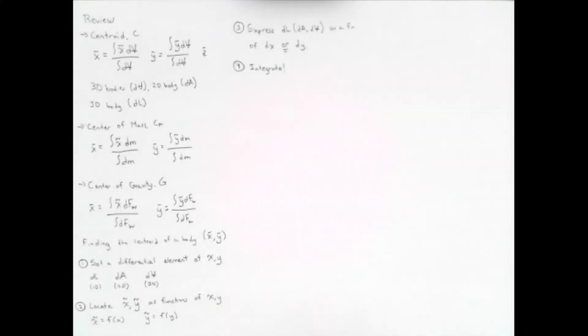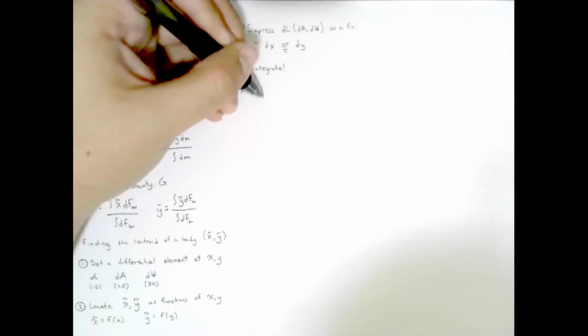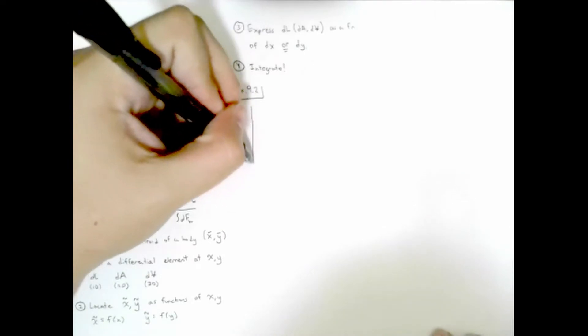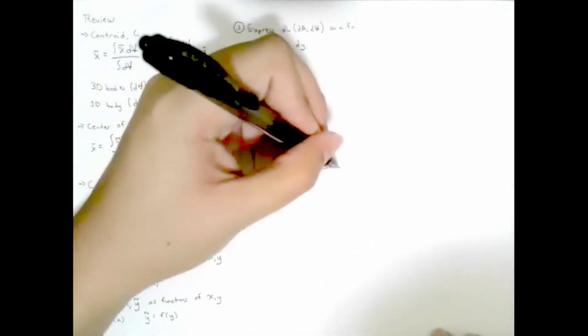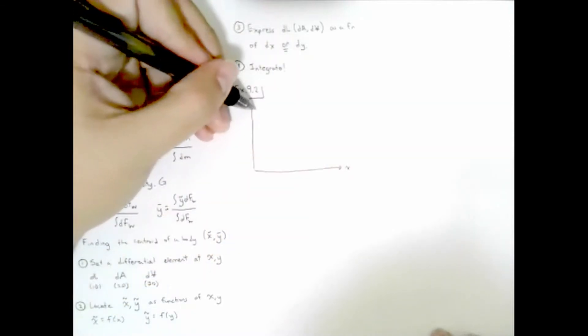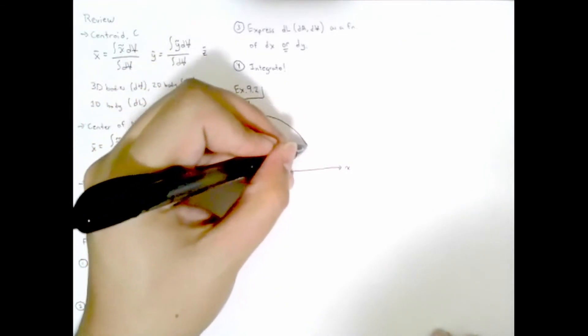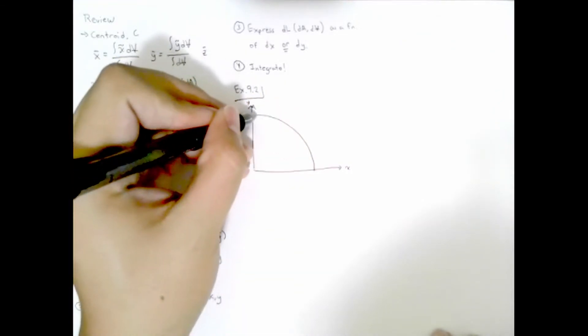On Monday we did an example for a one-dimensional element — a wire — and we visualized it as a one-dimensional element. Today I'd like to do another one-dimensional example. However, this time instead of looking at the element in Cartesian coordinates, we're going to look at the element in polar coordinates, and you'll see why in just a second. For this next example, let's consider a wire that essentially has a quarter-circle shape.